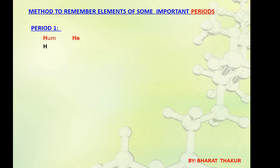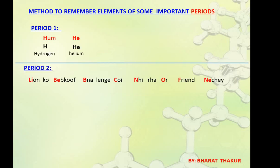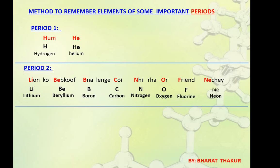Similarly for periods: period 1 — 'Hum hee', where 'Hum' represents Hydrogen and 'Hee' represents Helium. For period 2 — 'Loin ko bev ko bana leenge, koi nahi rahaa aur friend neiche'. Where 'loin' is for Lithium, 'bev ko' for Beryllium, 'bana' for Boron, 'koi' for Carbon, 'nahi' for Nitrogen, 'aur' for Oxygen, 'friend' for Fluorine and 'neiche' for Neon.